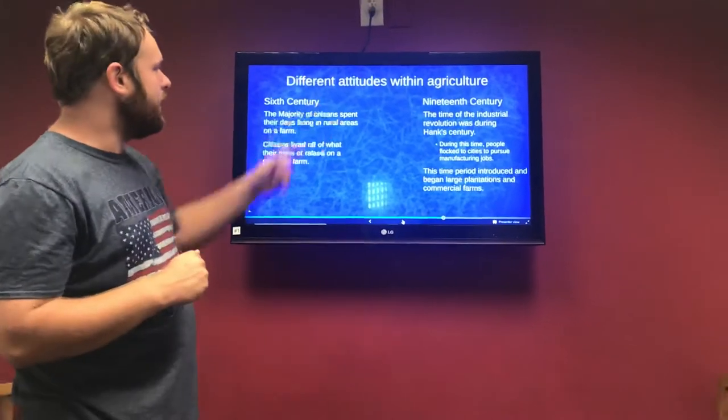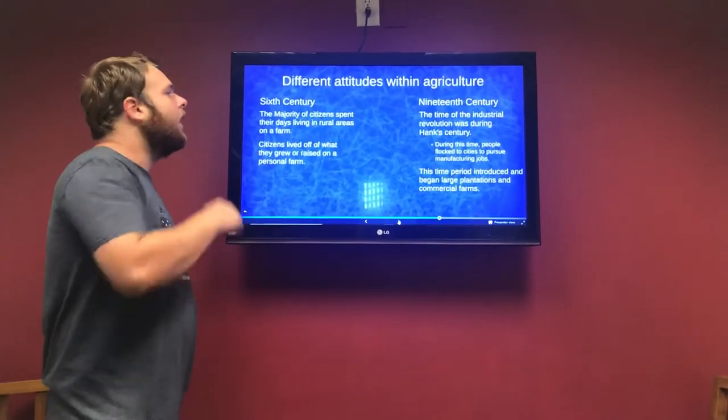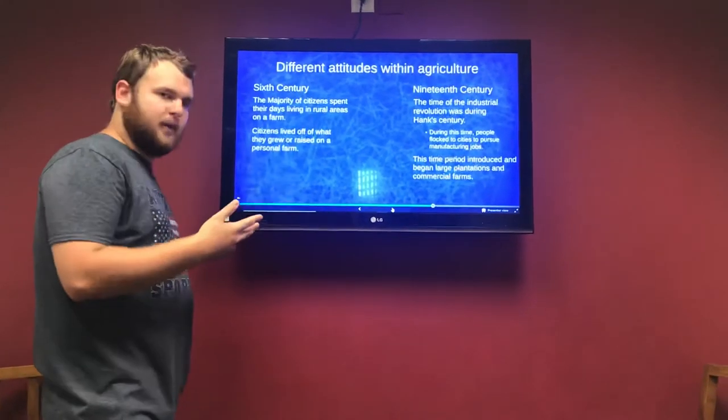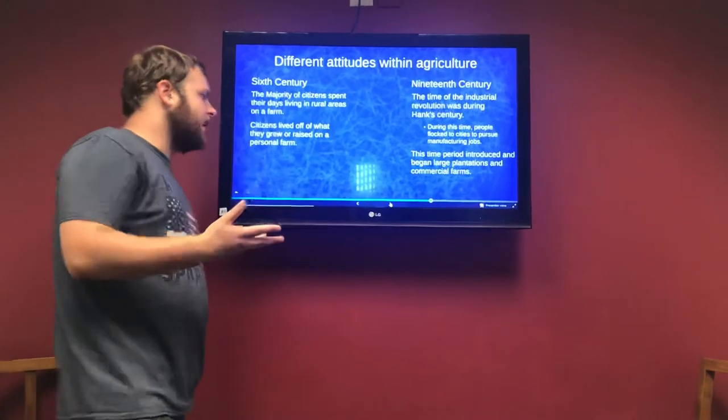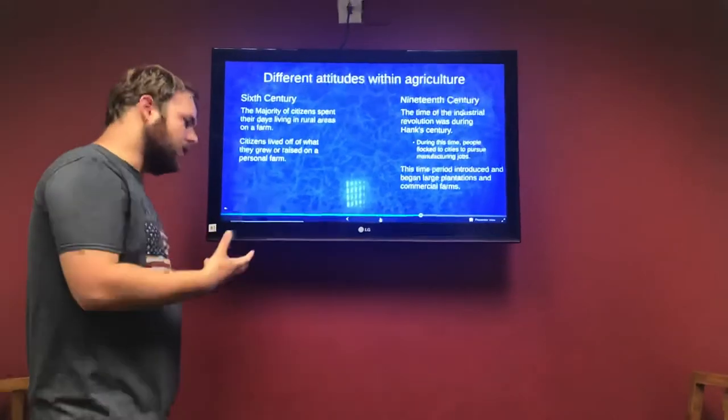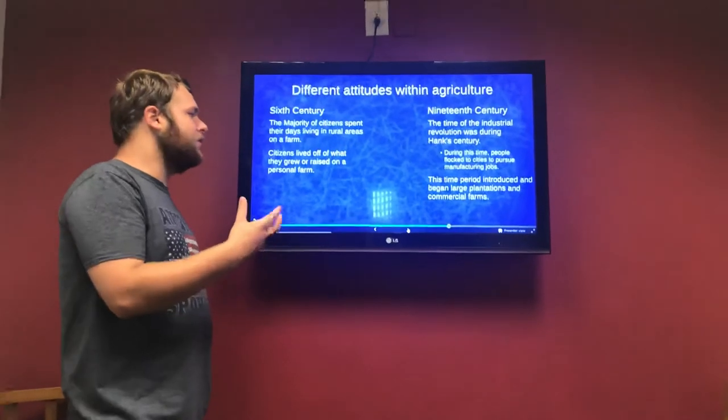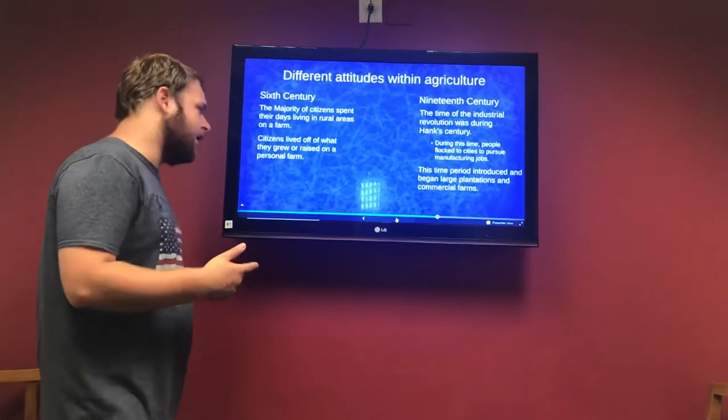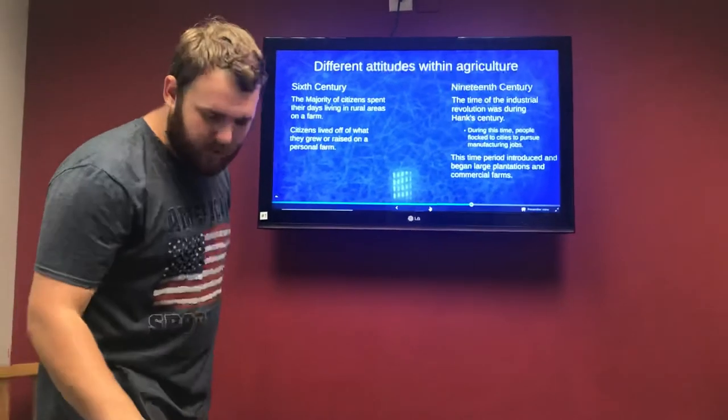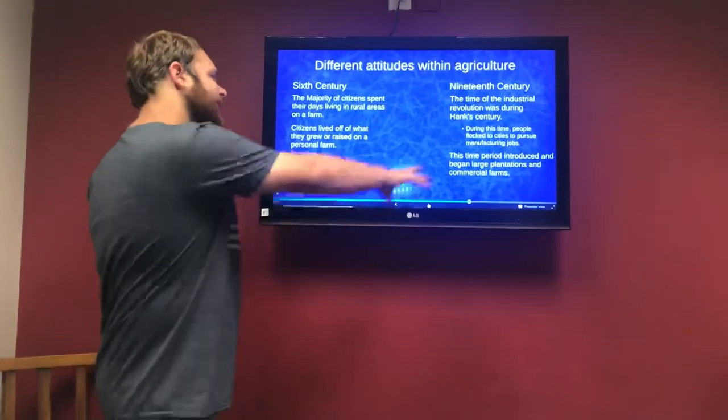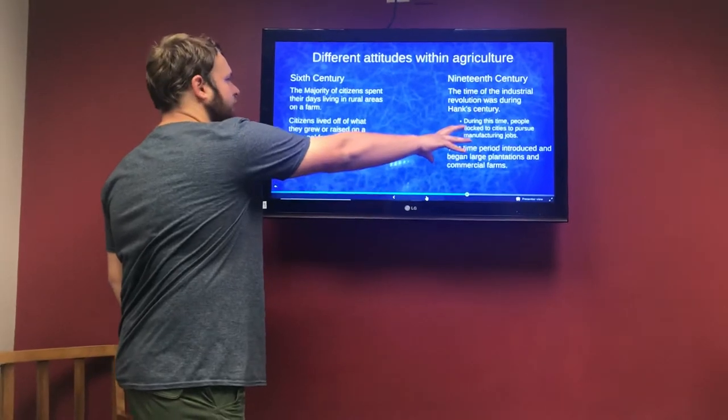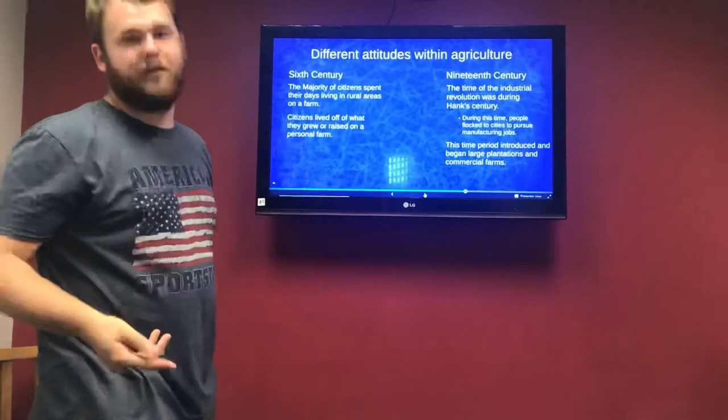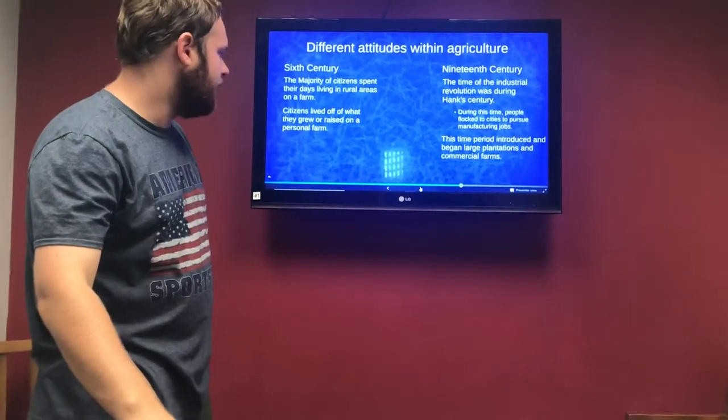When you fast forward to the 19th century, the Industrial Revolution is going on. During this time period many people left these rural areas and settlements to pursue manufacturing jobs. During this time period we see the introduction of large plantations and commercial farms. So a lot less people involved directly in agriculture whereas the sixth century just about everybody was directly involved in agriculture.